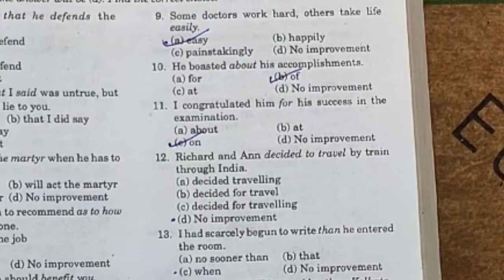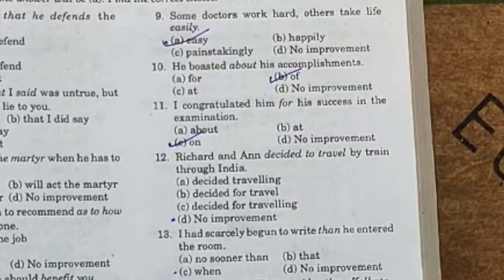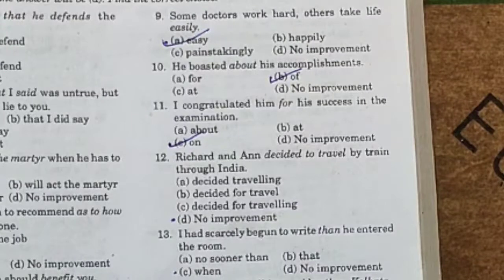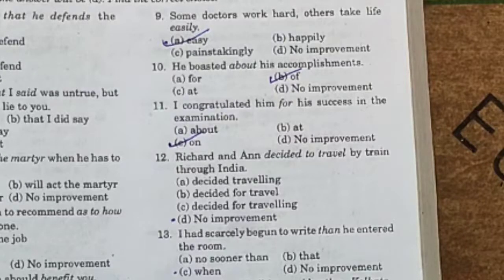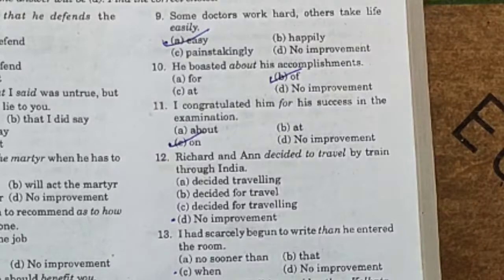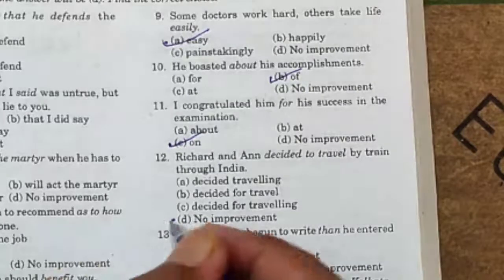Now twelfth one: 'Richard and N decided to travel by train through India.' Option A: decided traveling. Option B: decided for travel. Option C: decided for traveling. Option D: no improvement. This sentence is absolutely correct. It requires no improvement. As the directions stated, if none of the substitutions improve the sentence, the answer will be D. So the answer here is D, no improvement.